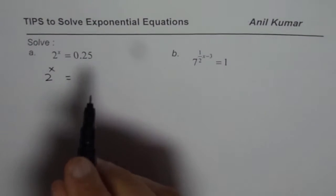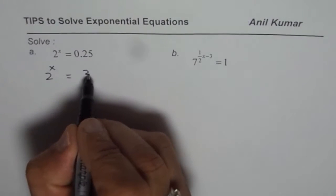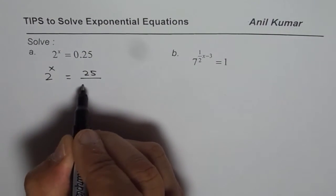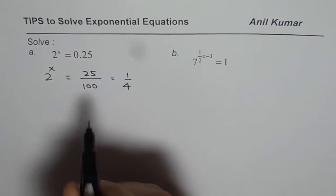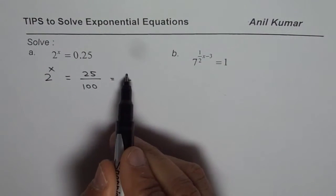Well, 0.25 is the same as 25/100, which is the same as 1/4. So 0.25 is actually 1/4.